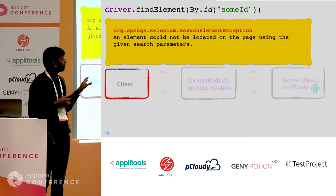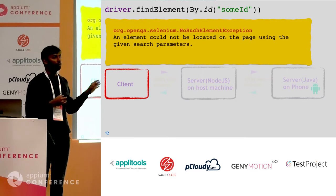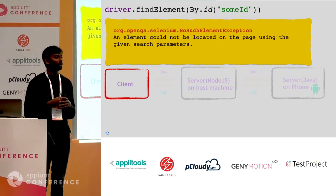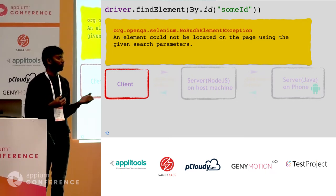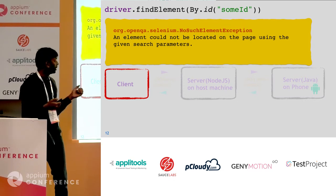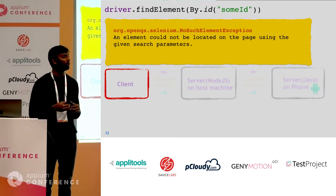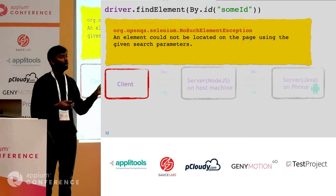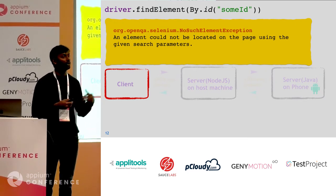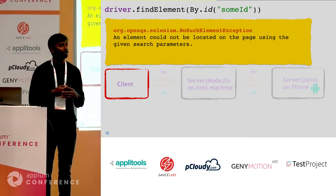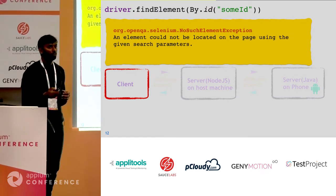To summarize, the client module interprets the given request, and whenever you get the response, it again interprets the response. That's what the client module does. The Appium server and the server running on the phone are there to serve your request. Based on the type of action, it might be served at the Appium server or at the server running on your phone.